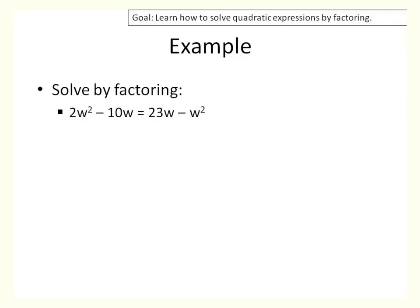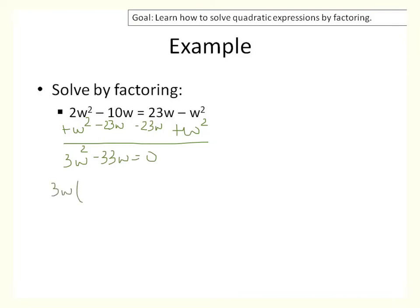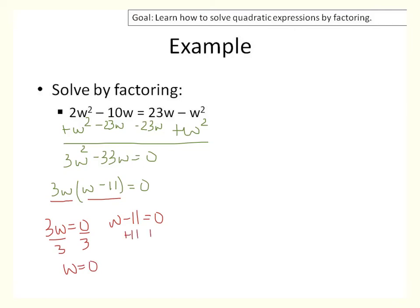Let's do one more. We want a positive w squared, so move everything to the left-hand side: 3w squared minus 33w equals 0. There's a greatest common factor of 3w, so pull that out and you're left with w minus 11. Now we have two factors: 3w and w minus 11. Set both factors equal to 0 and solve to get your two answers.